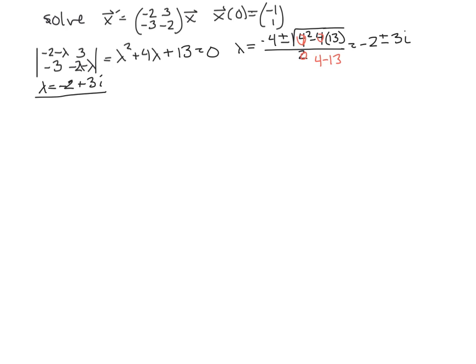And so plug that back into A - λI right up above it. So I've got negative, looking at this matrix right here. So I've got -2 - (-2), so that's 0. And then I'm subtracting lambda, so I'd have -3i. 3, -3, and then -2 minus, a -2 goes away, and I've got -3i.